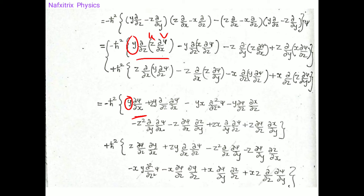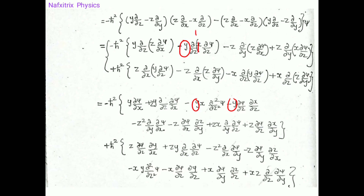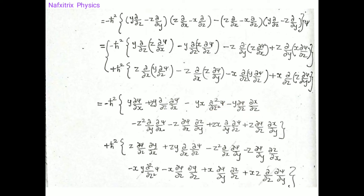Applying the product rule: y is kept as usual, and ∂z/∂z = 1, giving one term. Then keeping z aside and differentiating ∂/∂z of (∂ψ/∂x) gives another term. For the next part, u = x and v = ∂ψ/∂z; differentiating gives ∂/∂z of z = 1, and also the second-order term ∂²/∂z².